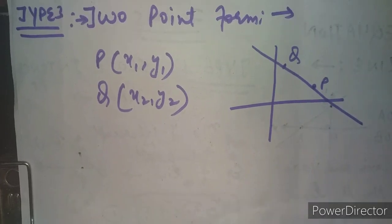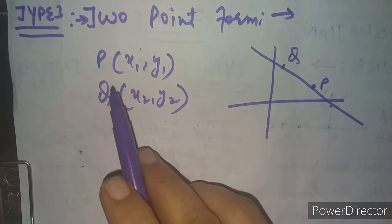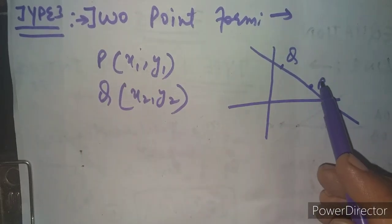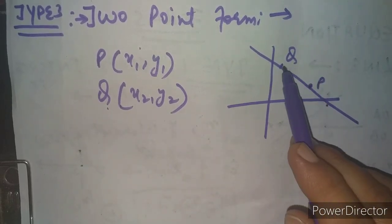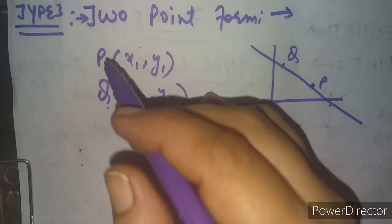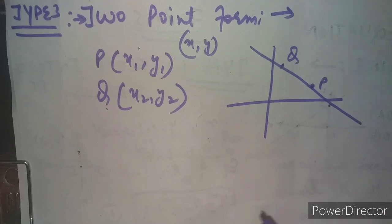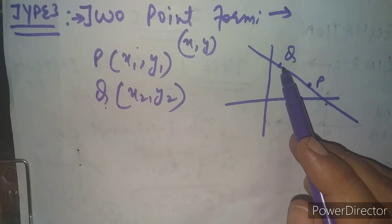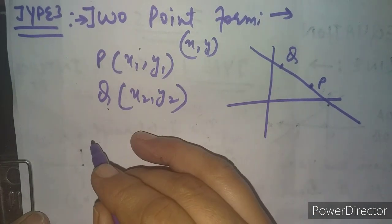Now the third type is the two-point form. Instead of a single point as in the previous form, we will be given two points through which the line passes — point P and point Q. So two points lying on the line are provided. We also take a general point for writing the equation. So x₁y₁ is the first point and x₂y₂ is the second point through which the line passes.